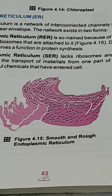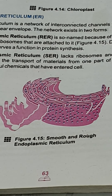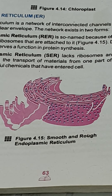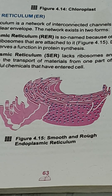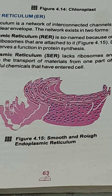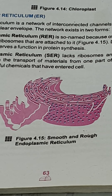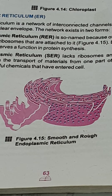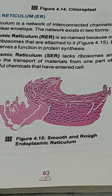We are discussing the different organelles present inside the cell, especially these organelles present inside the eukaryotic cell. Prokaryotic cells lack all these membrane-bounded organelles, so these structures are present in the eukaryotic cell. Some organelles are already discussed, and the next organelle is known as the endoplasmic reticulum, represented by ER.